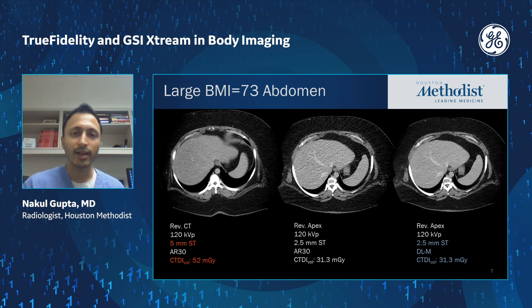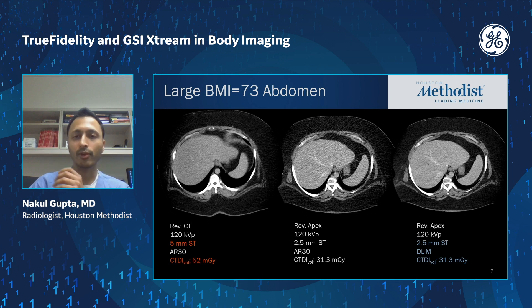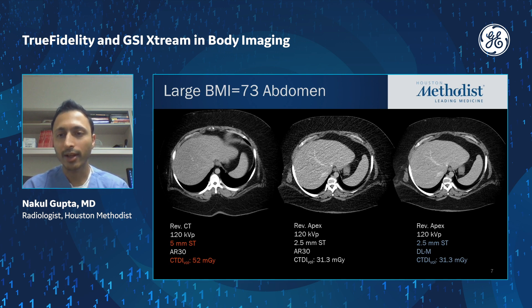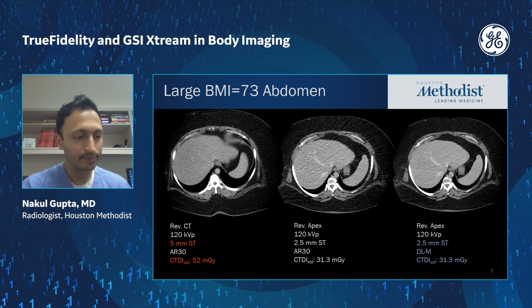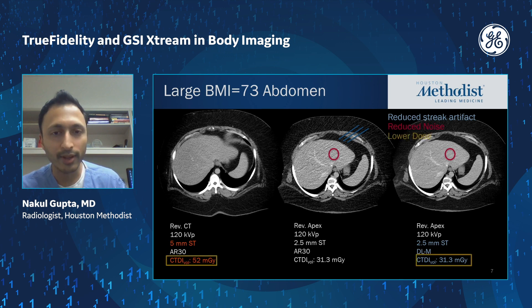One use case is enlarged patients — a place where you'll see a big benefit from this technique. The two images on the right are the same image at the same level, 2.5-millimeter slice thickness from the same scan and same patient, reconstructed with ACER-V and then deep learning medium. The deep learning-based reconstruction on the far right has much lower noise level and reduced streak artifacts. Comparing with the prior study from the same patient on a REVCT without deep learning, we achieved all that with lower dose and lower slice thickness as well.